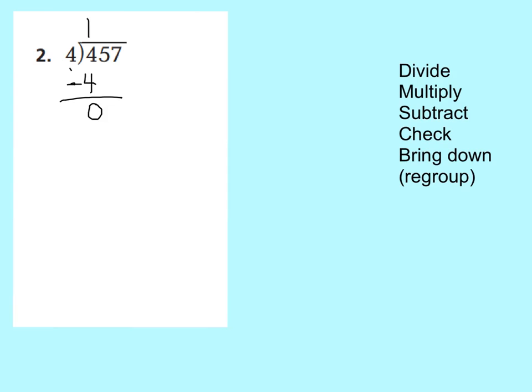Now we do the check step. I can see that I have 0 mats left, and that's less than 4 people or 4 groups, so I divided correctly. My next step is bring down — I'm going to bring down my tens place, my 5 groups of 10. Those are 5 strips or 5 long pieces.